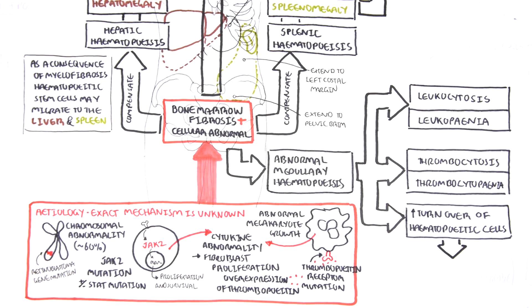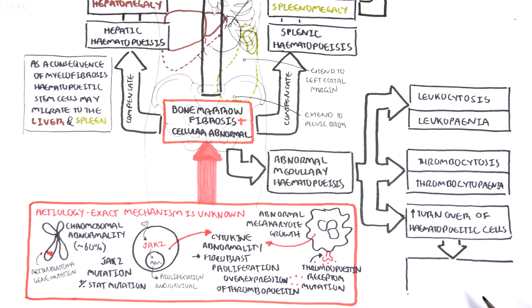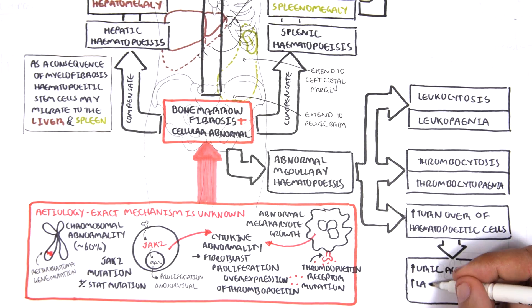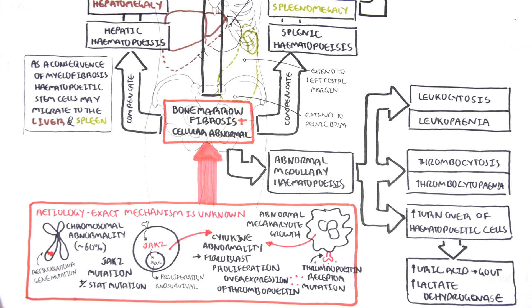This increase in cell turnover means that there will be an increase in things such as uric acid from DNA, which can lead to gout and urinary stone formation. As well, the increase in cell turnover means an increase in lactate dehydrogenase. Thus, these findings, uric acid and lactate dehydrogenase, are markers in myelofibrosis.